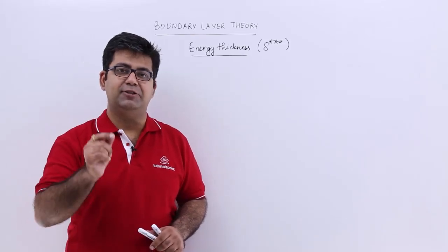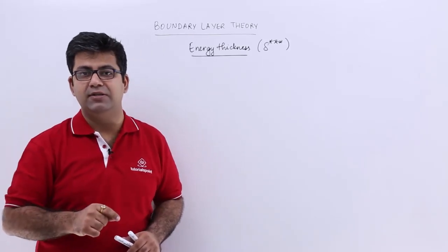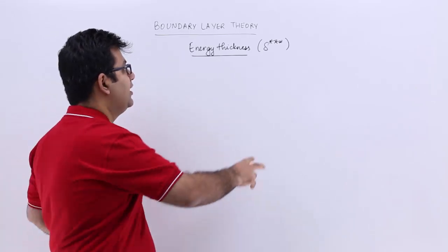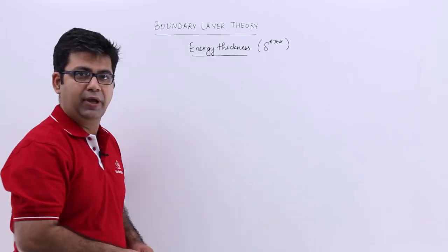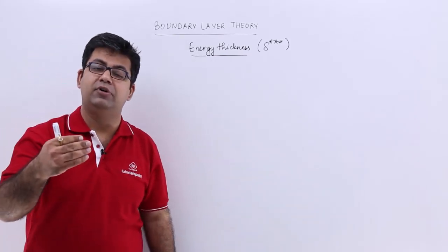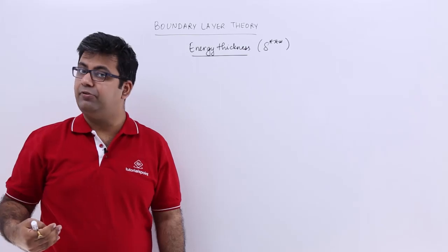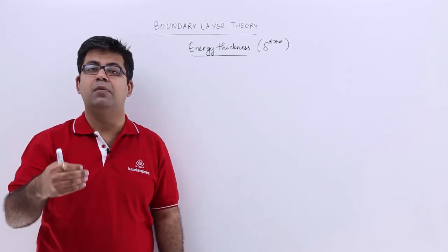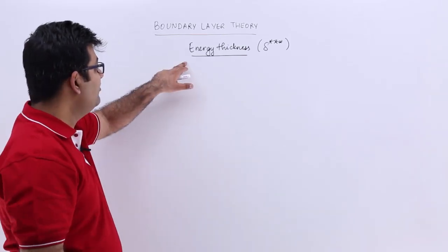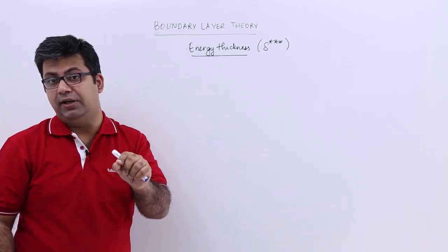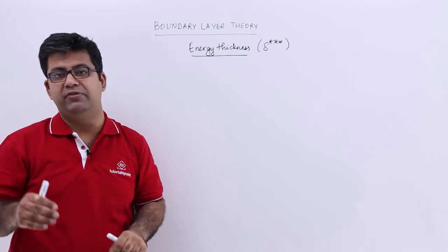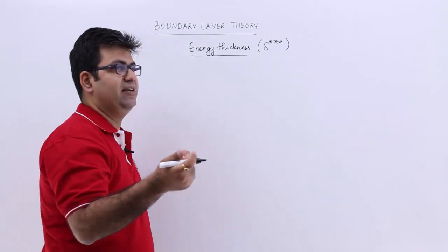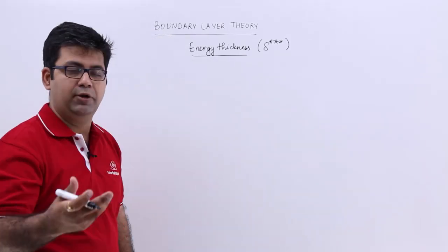After understanding the displacement and the momentum thickness, let us look at the last thickness — the energy thickness, denoted by delta triple star. As we had a loss of mass flow rate in the displacement thickness and a decrease in momentum per second in the momentum thickness, this would have an energy decrease. Since we are talking about flow, this means kinetic energy. Let us start with the lowest unit, that is the mass.